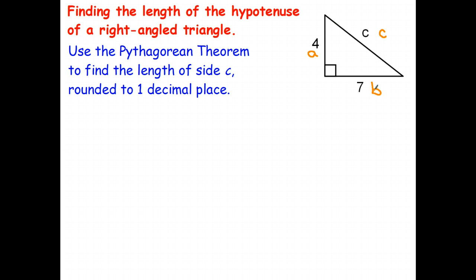So step one, label the three sides of the triangle a, b, and c. The next thing we do is we write down the Pythagorean theorem. c squared equals a squared plus b squared.